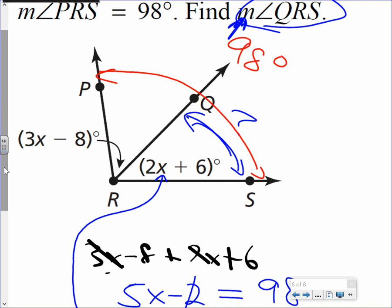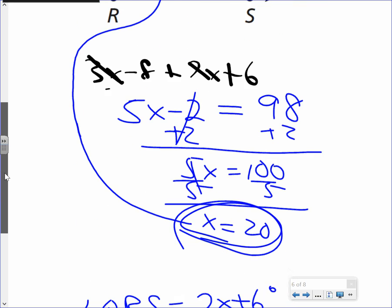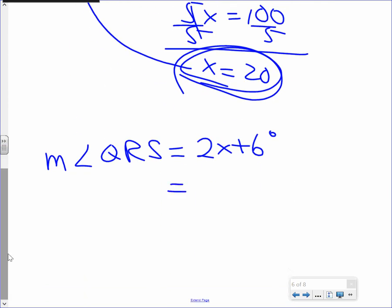In other words, stay with me. The measure of angle QRS is equal to, they give it to us, 2x plus 6 degrees. We know what x is though. We just figured that out because we added both angles and made them equal to 98 and we got x alone. x is 20. So now I'm going to rewrite this. Now wherever I see x, I'm going to replace it with 20. Careful, what's 2 times 20? 40. 40 plus 6. 46. So the measure of angle QRS is 46 degrees. Mission accomplished. There's a lot packed in there.